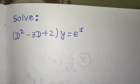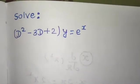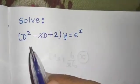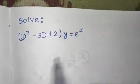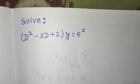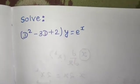Hello everyone, I hope you all are fine. So let's solve this differential equation. We have (D² - 3D + 2)y = e^x. This is a question of linear differential equation with constant coefficient.